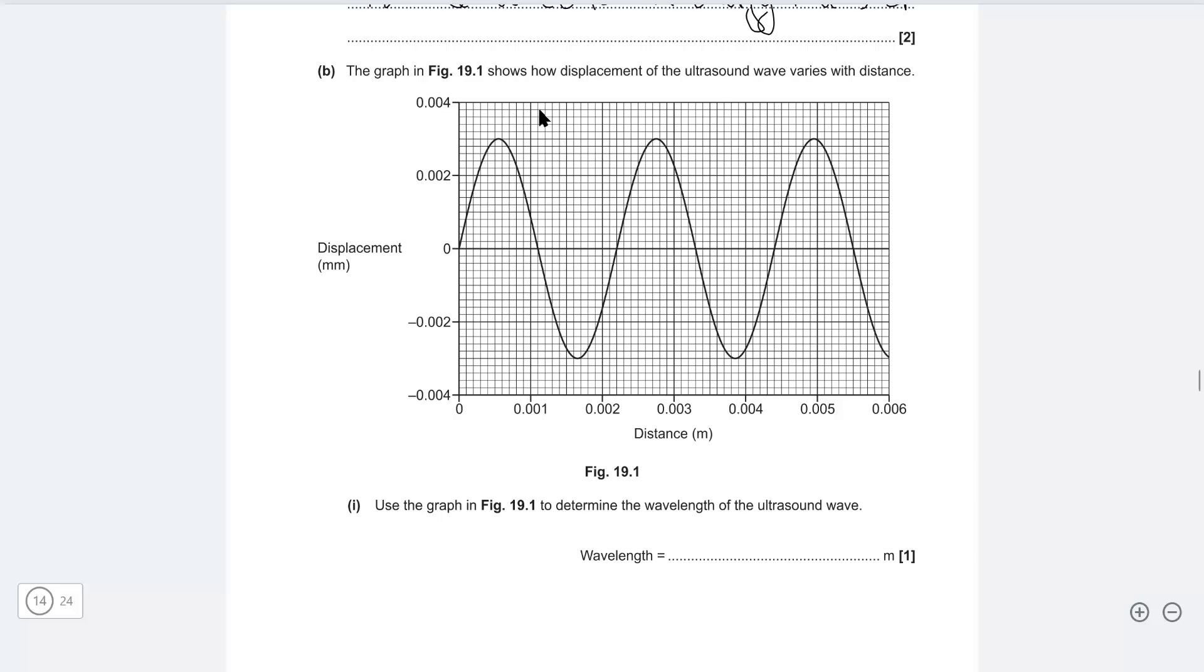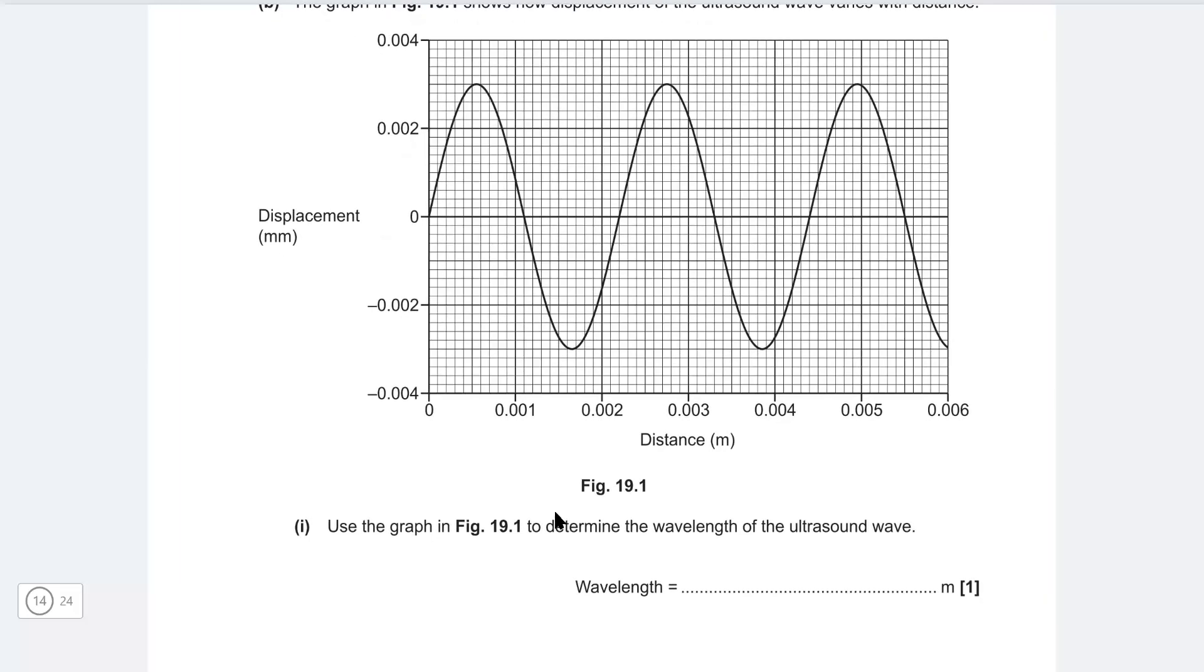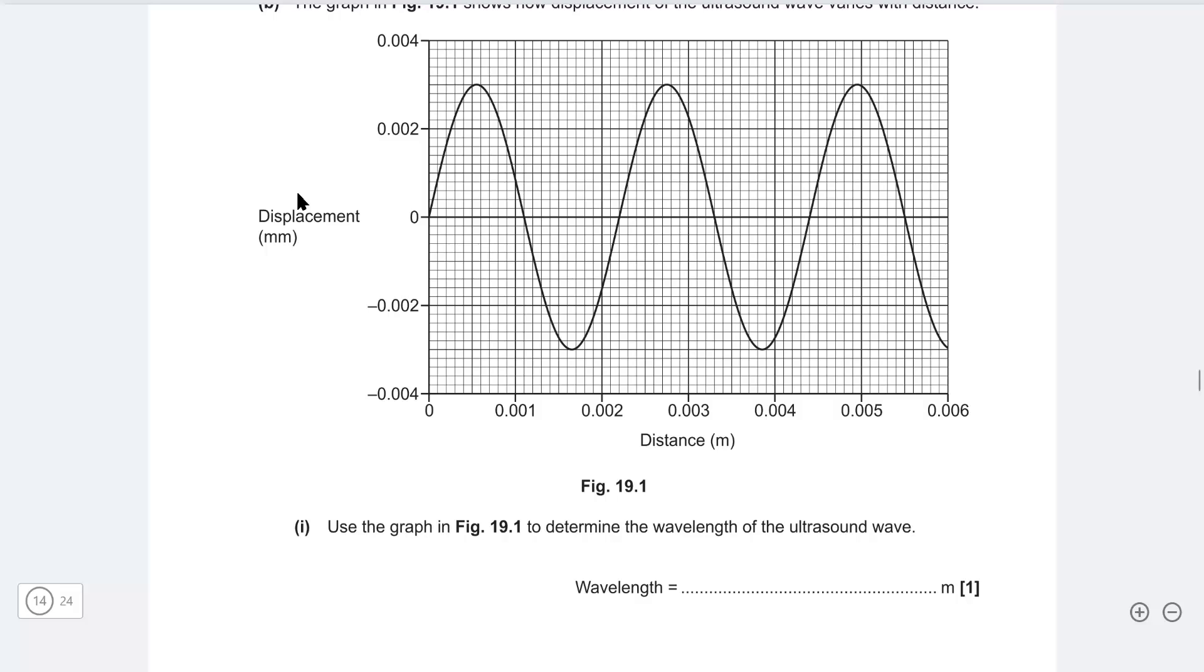Okay next one the graph shows the displacement against distance use the figure to determine the wavelength of this ultrasound wave. Okay so the wavelength is if it starts here this here will be one complete wavelength so it's going to be a little bit higher than 0.02 then it's just two squares and we've got 10 squares each of it is going to be 0.001 so this here will be an additional 0.002 otherwise we can just say that the wavelength will just be given by 0.022 accounting for the extra two squares.